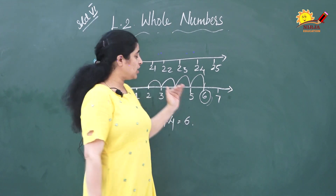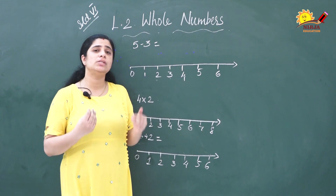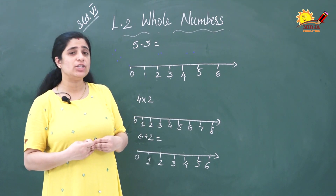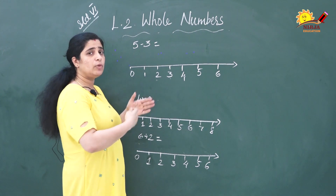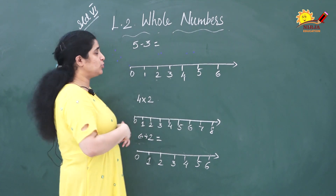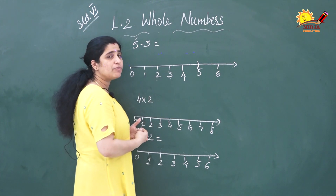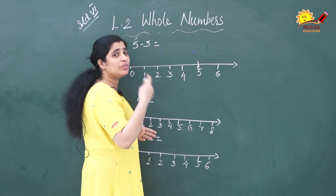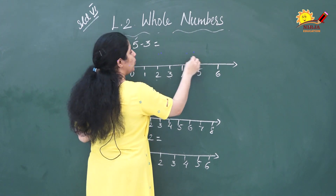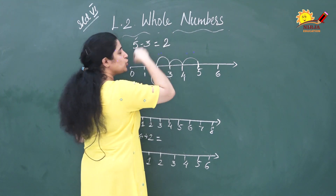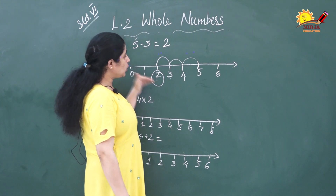Now let's see subtraction using the number line. In addition we moved to the right; for subtraction we do the opposite. Example: 5 − 3. Move 5 points to the right to reach 5. Then, since we are subtracting 3, jump 3 points to the left: 1, 2, 3. You reach 2. So the answer is 2.